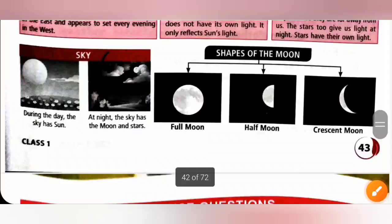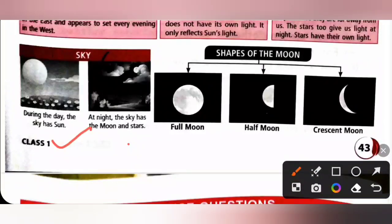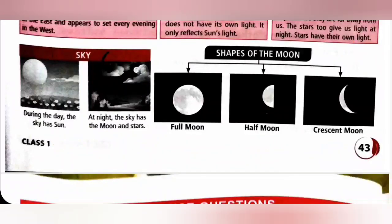Next is the sky. During the day, the sky has the sun. At night, the sky has the moon and stars. The shapes of the moon are: full moon, half moon, and crescent moon.